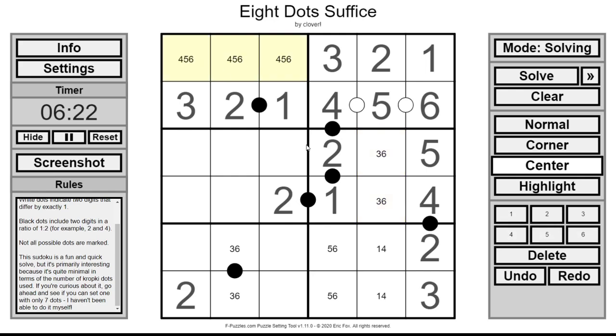And this must be three, six as well. Four, five, six up here. This three is looking at the three, six pair. Which sorts out the rest of that.